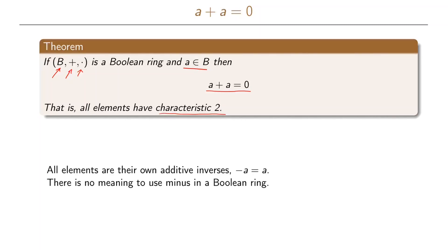From this theorem it follows that all elements are their own additive inverses, so negative a is always the same as a. This means there is no meaningful use of the minus sign in the Boolean ring, because negative a always equals a. So instead of writing a plus negative a, we can just write a plus a.